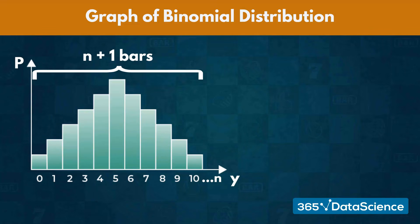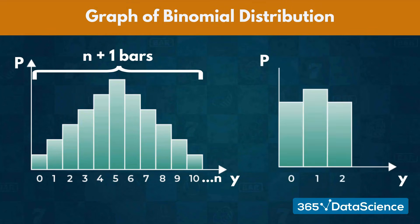For instance, we could be flipping the same unfair coin we had from the last lecture. If we toss it twice, we need bars for the three different outcomes: 0, 1, or 2 tails.